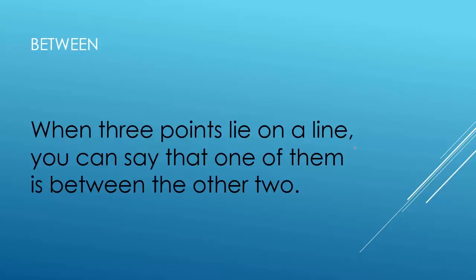Between. When three points lie on a line you can say that one of them is between the other. So for example if I were to have a line with point A and point B, then I can say point C is between line segment AB.